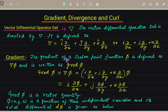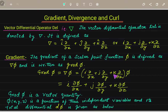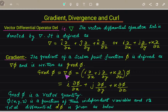Next is the gradient. The gradient of a scalar point function denoted by phi is defined as del into phi. This is the dot product del into phi, written as grad phi or the gradient of phi. So grad phi equals del phi, which equals i times del-phi/del-x plus j times del-phi/del-y plus k times del-phi/del-z. Here del is the partial derivative and del is the vector differential operator.